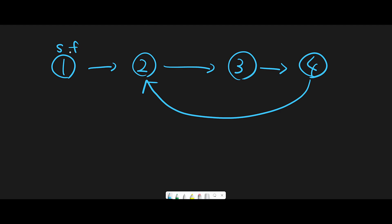Let's see one by one. First, slow pointer moves once and fast pointer moves twice. We repeat this process — slow pointer moves once and fast pointer moves twice. And then again, slow pointer moves once and fast pointer moves twice. Now they are both pointing to node four. That means we have a circle in the linked list, so we should return true.